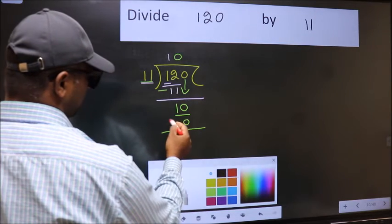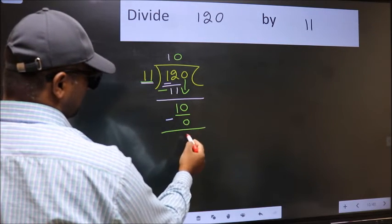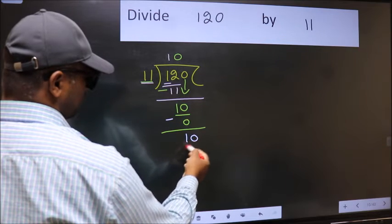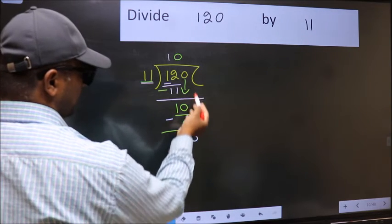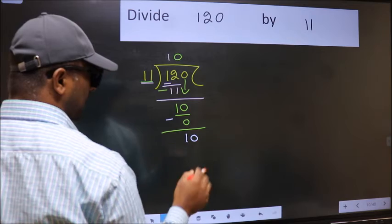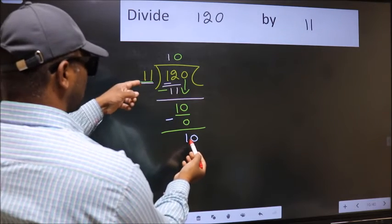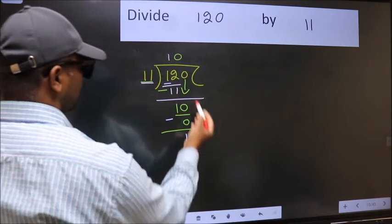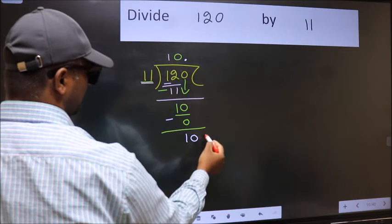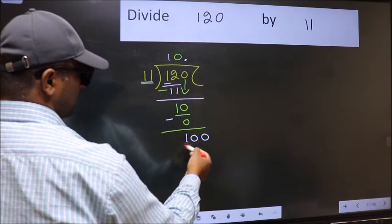Now you should subtract. 10 minus 0, 10. Over here, we did not bring any number down. And 10 is smaller than 11. So now you can put dot and take 0. So 100.